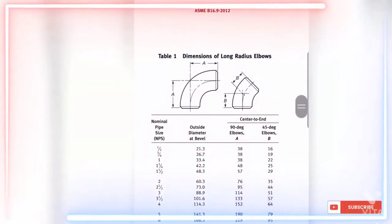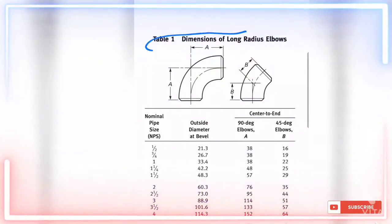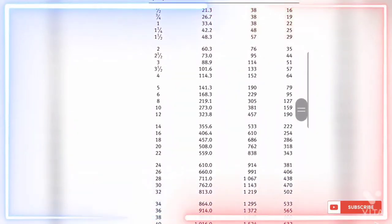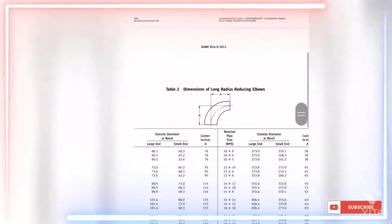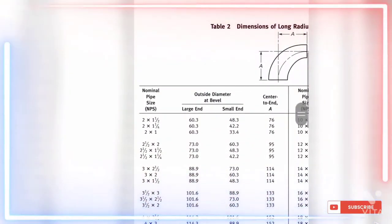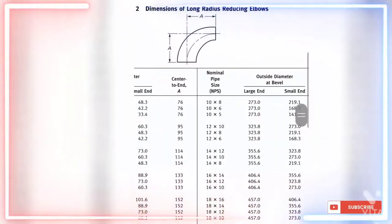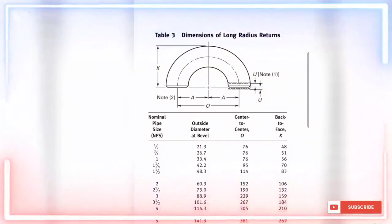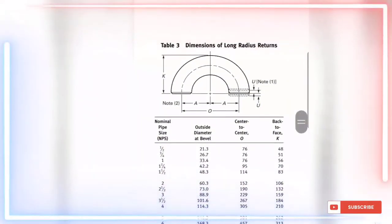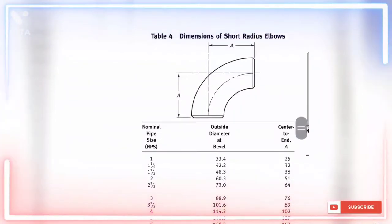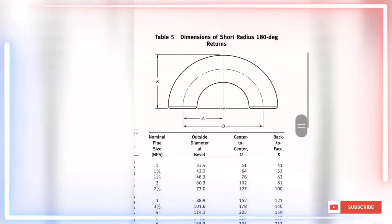In this table, the center-to-end distance is given for long radius elbows. Table 2 is for dimensions of long radius reducing elbows. Table 3 and Table 4 are for short radius elbows. Table 5 is for short radius 180-degree returns.